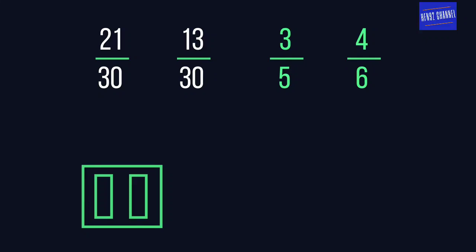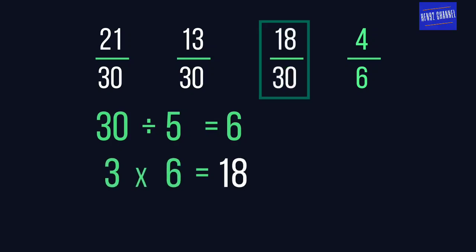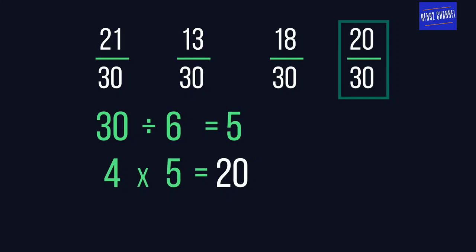We apply the same process for the other two. There are six fives in 30, so we multiply the numerator 3 by 6, giving us 18 over 30. As there are five sixes in 30, we multiply the other numerator 4 by 5, giving us 20 over 30.